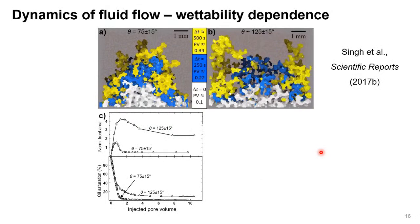The same thing shown in 3D — different colors show different time steps of water injection. For 75-degree contact angle we have a more compact front, and for 125 degrees we have a ramified front with a lot of finger formation. Quantitative information showed the same: higher front area for the 125-degree case, as expected.